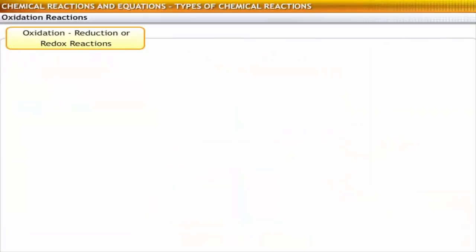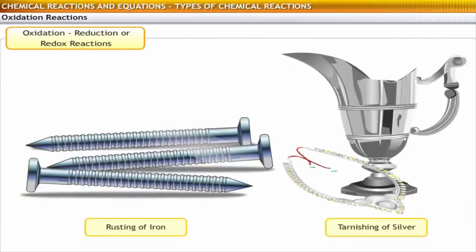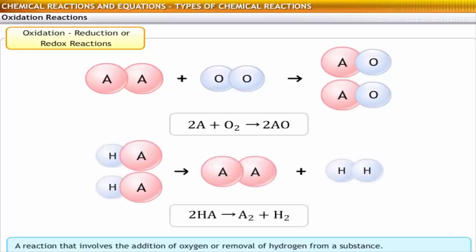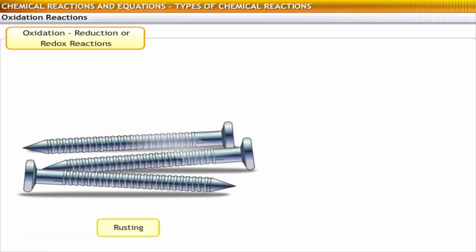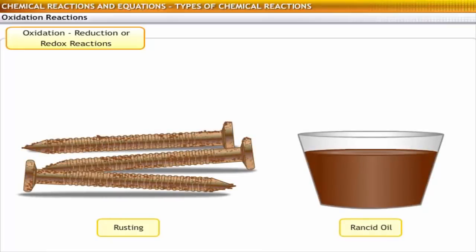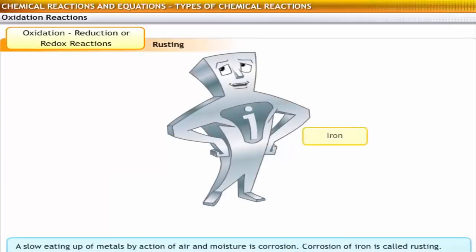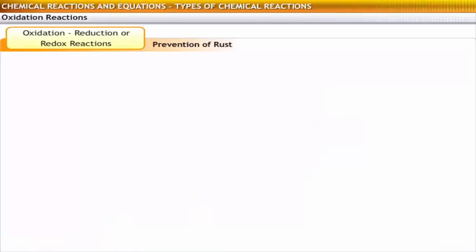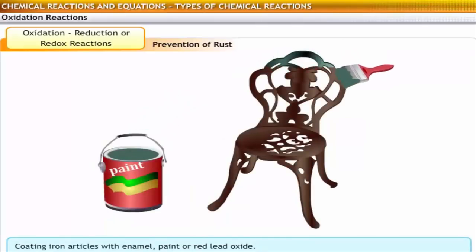There are some reactions that we see every day. Most of these reactions involve oxidation, reduction, or both. An oxidation reaction involves the addition of oxygen or the removal of hydrogen from a substance. Two common examples of oxidation are rusting and rancidity. When an article made of iron is exposed to moist air for a long time, it turns reddish-brown due to rusting. Here, iron is oxidized to form iron oxide. Chemically, rust is known as hydrated ferric oxide. Rusting of an iron article can be prevented by coating the surface with enamel, paint, or red lead oxide.